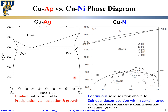Here I'm showing two phase diagrams — two binary phase diagrams. One is between copper and silver, the other one is between copper and nickel. Both are metallic alloy types of phase diagram.